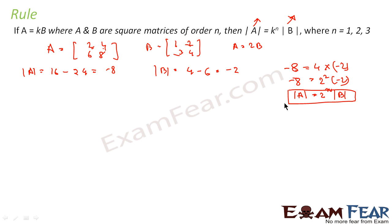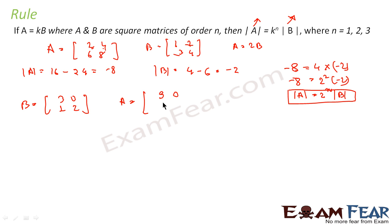Let us take one more example where n is equal to 3 — wait, actually order n equals 2. Let B be the matrix [3, 0; 1, 2] and let A be thrice of this: [9, 0; 3, 6]. We can say that A is nothing but 3B, because all the elements are thrice — 3 into 3 is 9, 0 into 3 is 0, 1 into 3 is 3, 2 into 3 is 6.